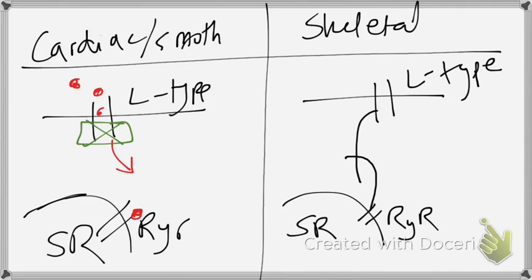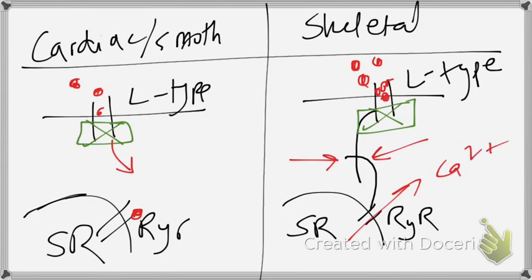On the other hand, if verapamil binds to the L-type channel of a skeletal muscle, even though calcium is unable to enter any more into the cell, it still binds to this calcium channel. And just because of this joint right here, the RYR will still release calcium into the cell, and the cell will still depolarize, and the cell will still contract.